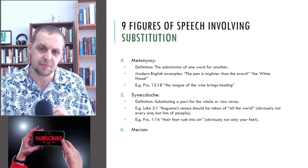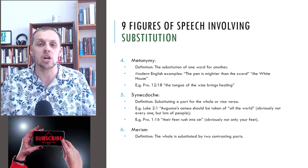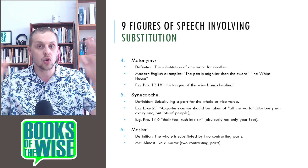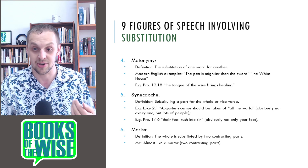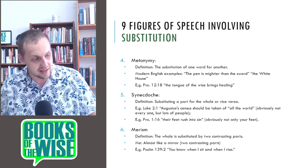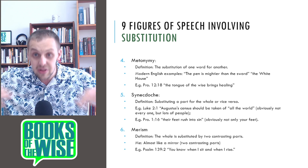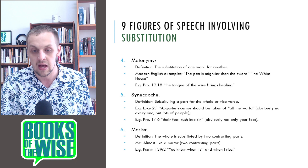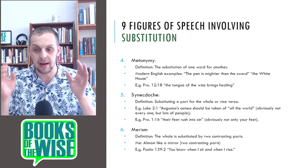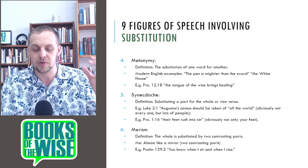Another type of figure of speech is merism: when the whole is substituted by two contrasting parts. For example, Psalm 139:2: you know when I sit and when I rise — two contrasting parts, but what is meant is everything in between. The whole is substituted by the two contrasting parts. Also, God said he is the alpha and the omega, the beginning and the end — and everything in between.